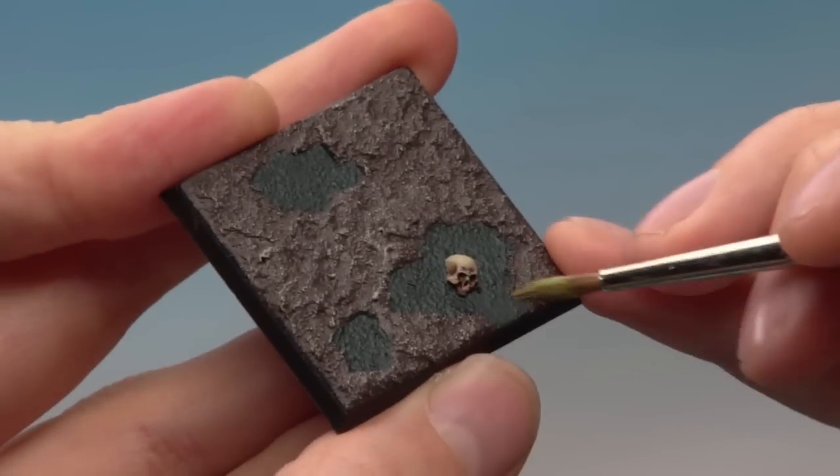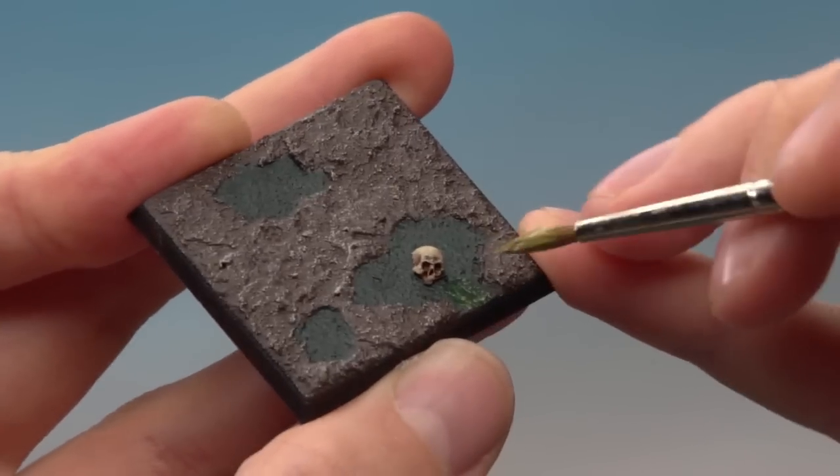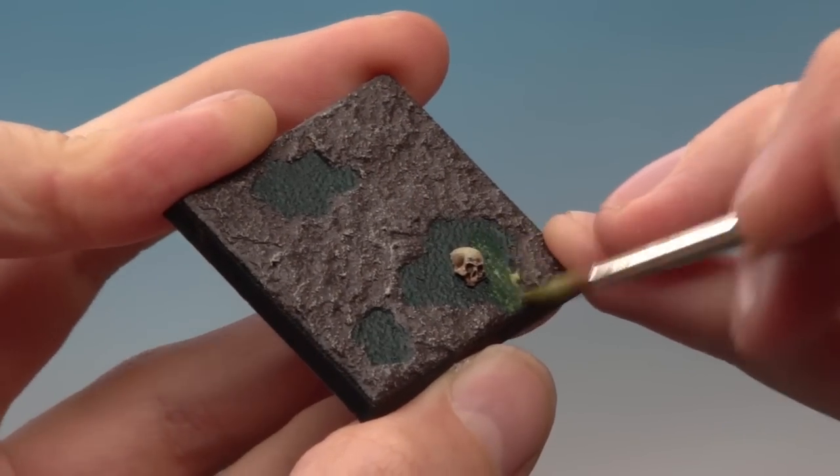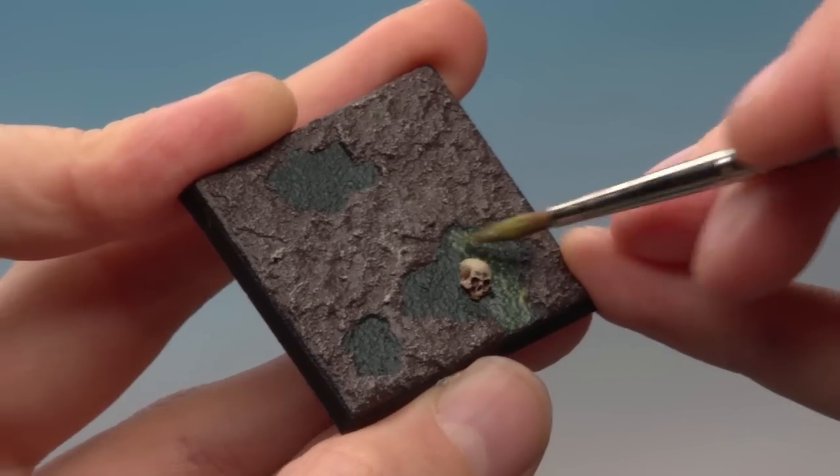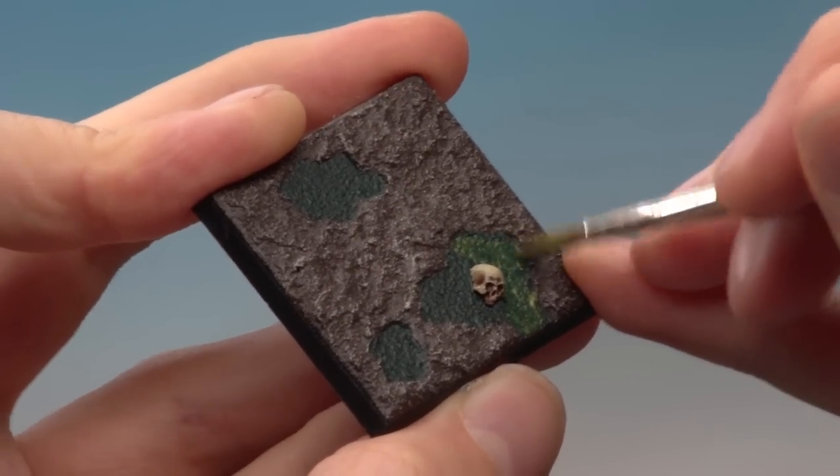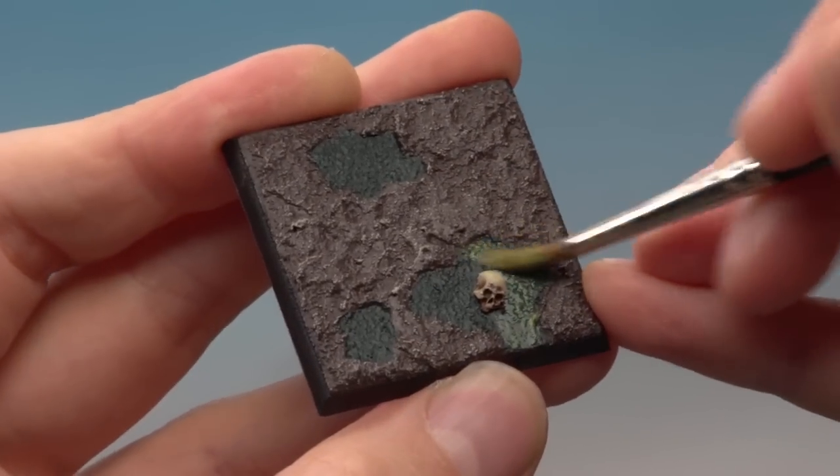Nurgle's Rot is quite a transparent color, so this is why we did the Caliban Green in the first place. You'll see that through it. When I start painting this on, you can see immediately you can still see that Caliban Green through there, but what you must do when you're doing this is resist the temptation to apply this color too thickly. About the thickness I'm doing here is perfect.